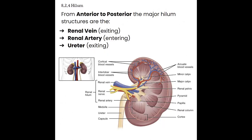The hilum of the kidney is found on the medial portion as a vertical opening through which structures exit and enter. Moving from anterior to posterior, the major hilum structures are: the renal vein (exiting), the renal artery (entering), and the ureter (exiting). So anterior to posterior: the most anterior structure is the renal vein, followed by the renal artery, then the ureter. A helpful mnemonic — the exiting structures are on either side and go in alphabetical order: renal vein to ureter. Other structures like lymphatics and nerves also pass through the hilum but are not visible on ultrasound.